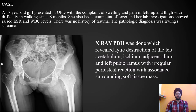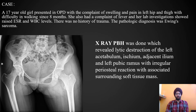This is the first case: a 17-year-old girl presented in OPD with complaints of swelling and pain in the left hip and thigh with difficulty walking for eight months. She also had a complaint of fever, and lab investigations showed raised ESR and WBC levels. There was no history of trauma. The pathological diagnosis was Ewing sarcoma.